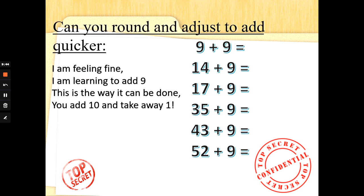Now let's have a little look at rounding and adjusting to do more complex additions — there will be more training videos coming on this soon. When we want to add bigger numbers that are close to a multiple of 10, like 9, 19, 29 or 39, it's much quicker to add multiples of 10 and take one away. We call this rounding and adjusting. In class we've learned how to add 9: you add 10 and take away 1. So 9 add 9: do 9 add 10 which is 19, take one away to get 18. 14 add 9: do 14 add 10 is 24, take one away — 23. 17 add 9: 17 add 10 is 27, take away 1 gives us 26.